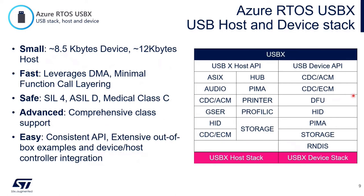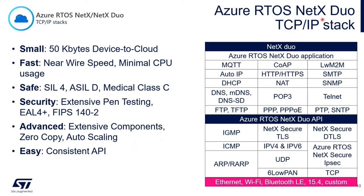For USBX, what is important to note is the large amount of classes already available for you. For the NetX Duo — which is the IPv4 and IPv6 stack — 50KB for such a stack is really interesting. More importantly, I'd like to draw your attention to the additional networking layers on top of the TCP/IP stack that are needed for any kind of networking application: MQTT, CoAP, DHCP, SNMP, DNS, mDNS — these are already available for you as part of the package, and they are mandatory for any kind of networking application.